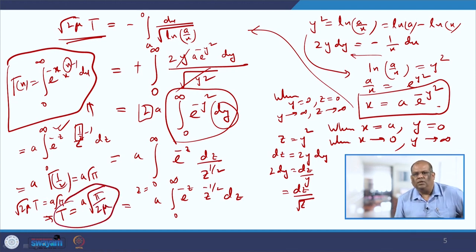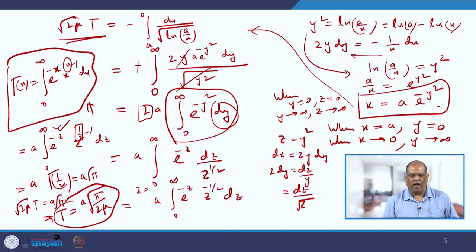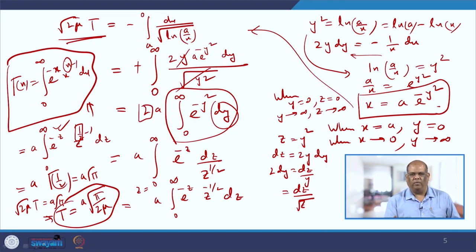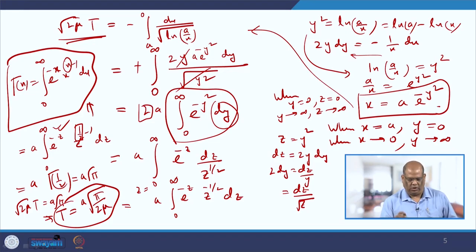That is how you model this kind of situation where the particle is moving in a straight line following some variable acceleration. You find the velocity, then find the relation between x and t, and ultimately find the time for the particle to reach the origin.